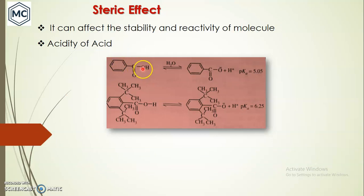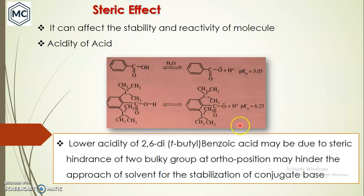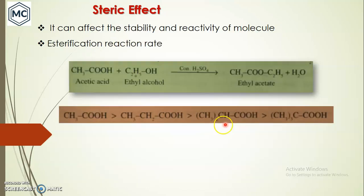Next is the acidity of acids. Benzoic acid, when you attach a tertiary butyl group at the ortho position, the acidity decreases. The lower acidity of 2,6-di-tert-butyl benzoic acid is due to the steric hindrance of the two bulky groups at the ortho position, which can hinder the approach of solvent. Normally, acidity depends on the stability of the conjugate acid, which is stabilized by the solvent. In this case, the solvent cannot approach due to the bulkiness of the groups, so acidity decreases.